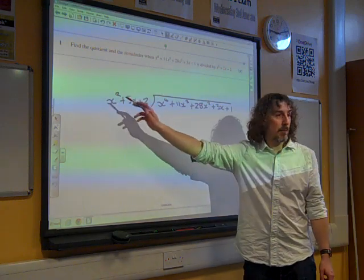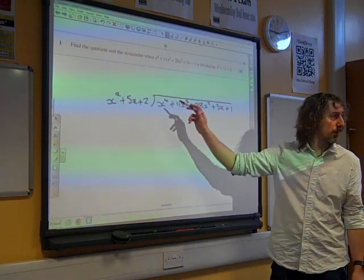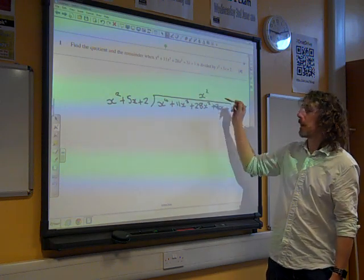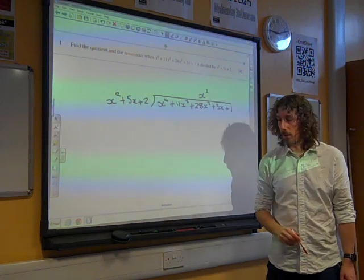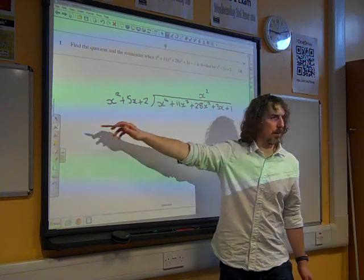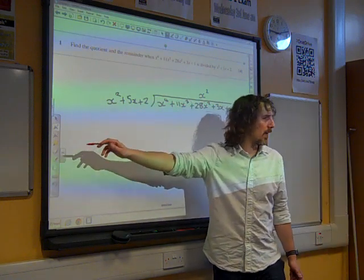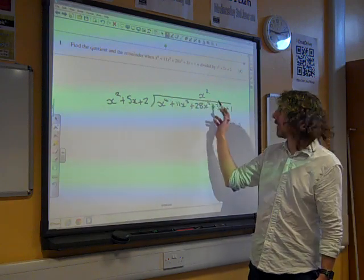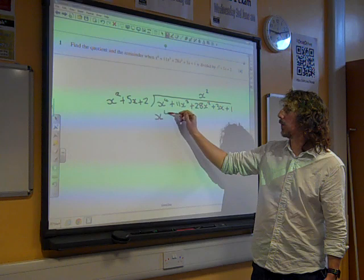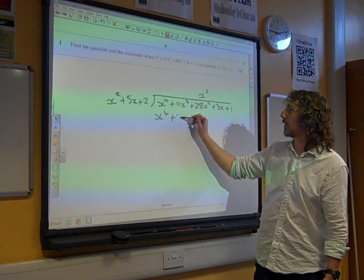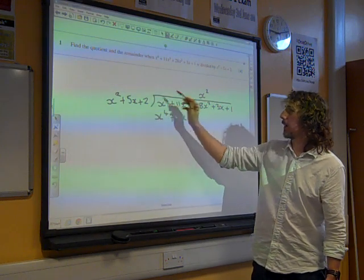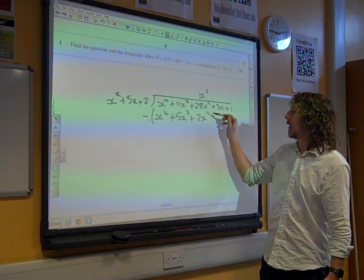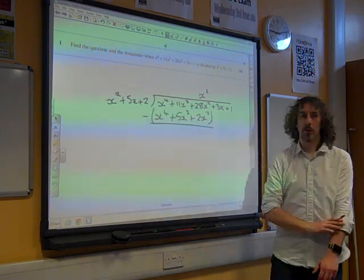So we're going to say, what do you multiply x squared by to get x to the 4? And the answer is x squared. And we do that in multiplication. Now, it's up to you. You can do the little bit of multiplying over on the side. But probably your answer is good enough to do x squared times that is going to give us, well, x squared times x squared is x to the 4, x squared times 5x is 5x cubed, x squared times 2 gives us 2x squared.